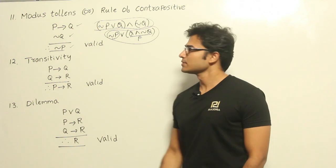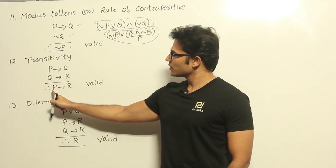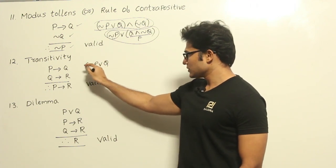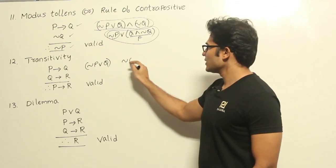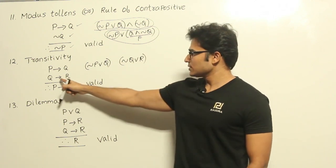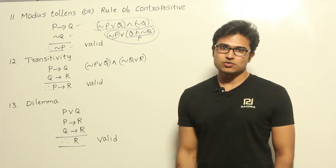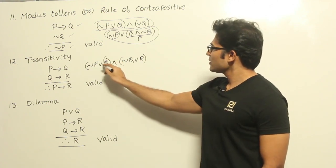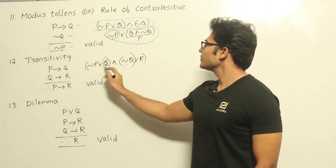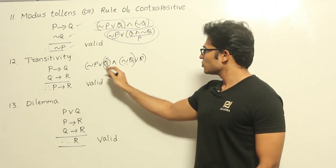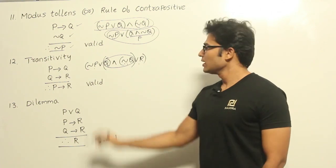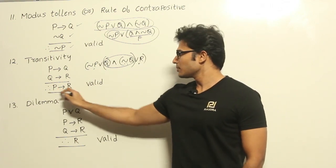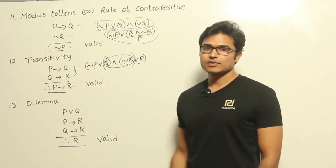Transitivity (hypothetical syllogism): given P→Q and Q→R, we conclude P→R. P→Q is ¬P∨Q and Q→R is ¬Q∨R. Since both are true, their conjunction is true: (¬P∨Q)∧(¬Q∨R). Applying conjunction between Q and ¬Q gives false, leaving ¬P∨R, which means P→R is true. Therefore from these two premises we get P→R, and it is a valid argument.